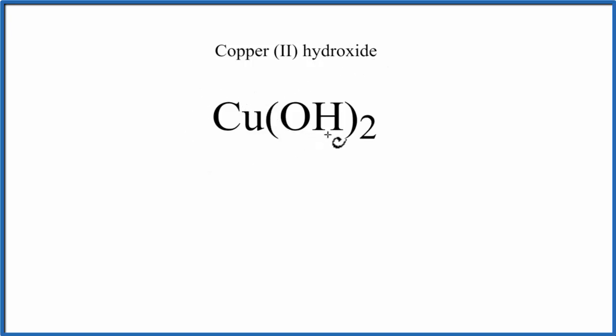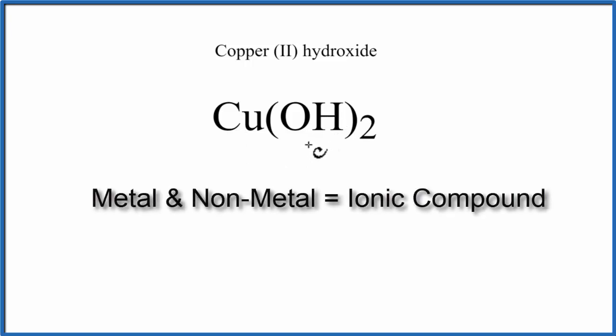Copper, that's a metal, and then we have oxygen and hydrogen. These are both non-metals, and they're bound tightly together in what's called the hydroxide ion. So we have a metal, some non-metals, that's an ionic compound.